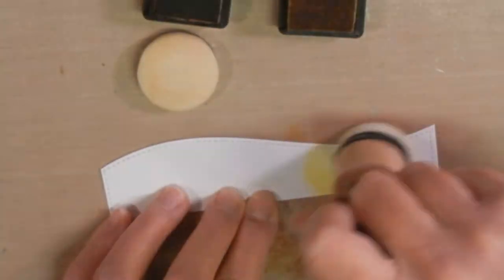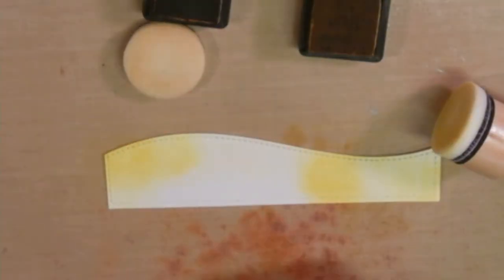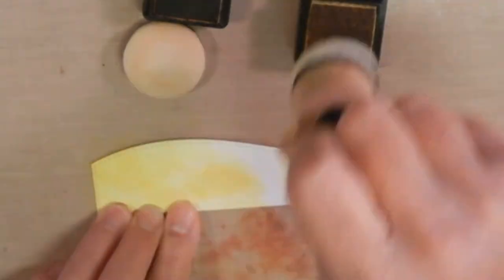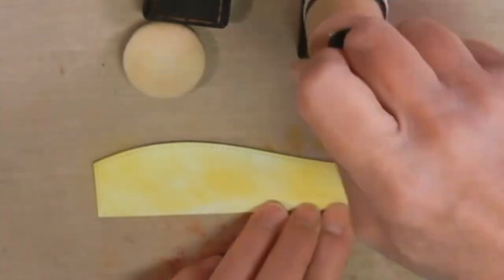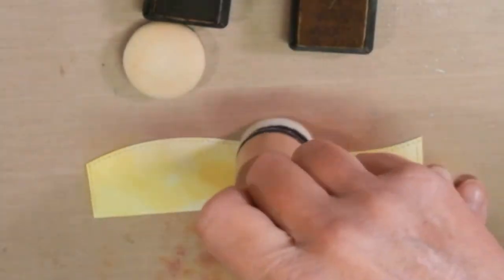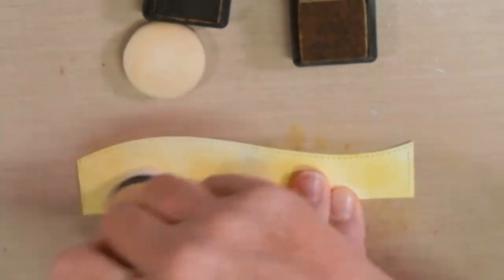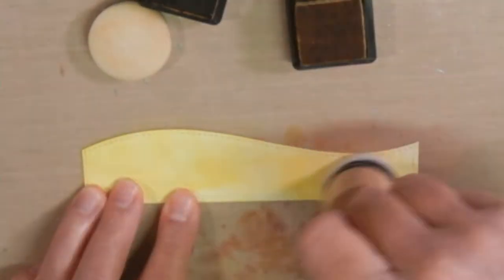Next I cut out Bristol Smooth paper with my lawn fawn hillside border die and then I went over it with Scattered Straw Ink and then I used my wild honey to go around the edges to give it kind of a dried grass look.